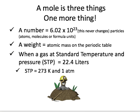A mole is actually three things — these will be our conversion factors. First, it's a number: 6.02 times 10 to the 23rd, which could be particles, atoms, molecules, or formula units — always, just like a dozen is always 12. Second, it's a mass or weight, found on the periodic table for the specific element. These are your dimensional analysis conversion factors.